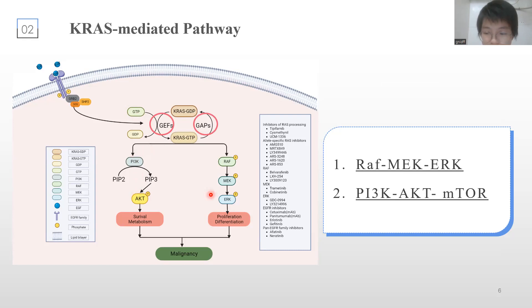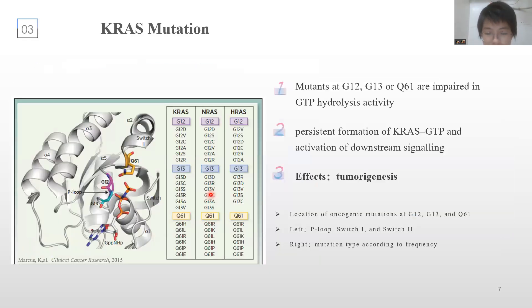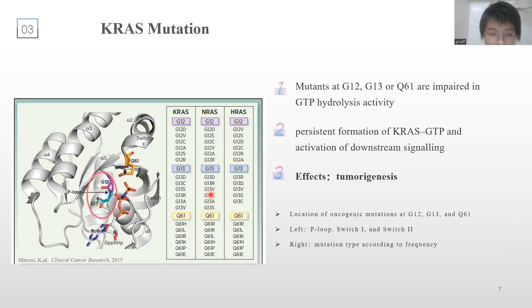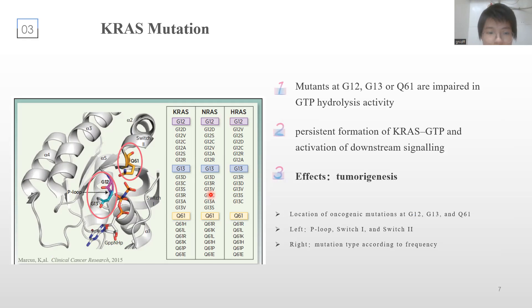GAP, on the other hand, catalyzes the hydrolysis of GTP, thus terminating this signaling cascade. Although wild-type KRAS cycles between GTP and GDP balanced forms, this is not the case for mutant KRAS. Mutations at G12, G13 in the P-loop and Q61 in the switch-2 region impair GTP hydrolysis activity, thus promoting persistent formation of KRAS-GTP and activation of downstream signaling, eventually leading to tumorigenesis.